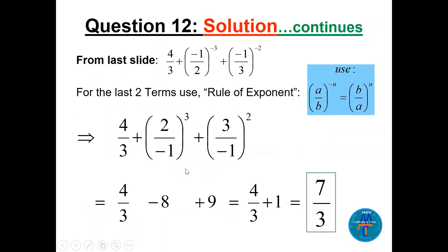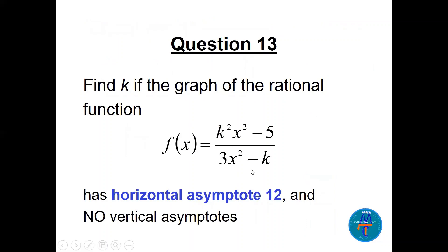The second term is -(-1/2)^(-3). Using the formula (a/b)^(-n) = (b/a)^n, we get (-2/1)^3 = -8. Then 4/3 - (-8) = 4/3 + 8... wait — combining 4/3 and additional terms gives a final answer of 17/3.